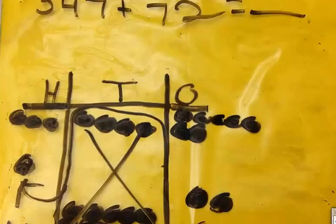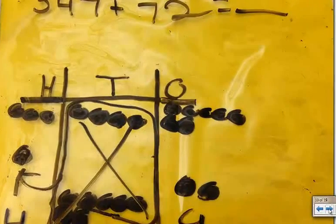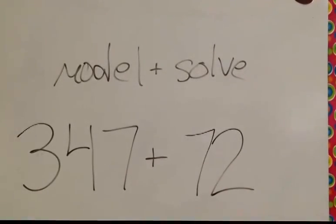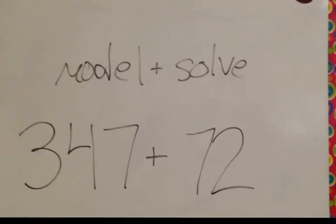And now we're going to take the time to have some of Mrs. McCoy's second graders explain to you how they did their problem. So today we're going to model and solve 347 plus 72. And we're going to have Harrison do that for us.